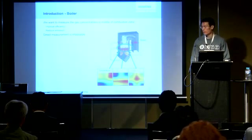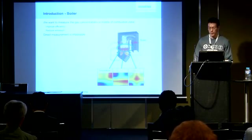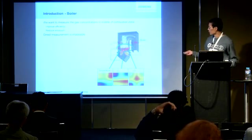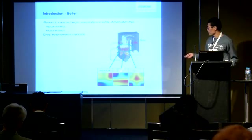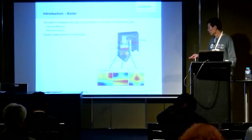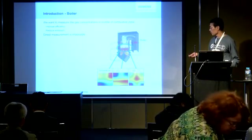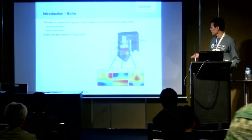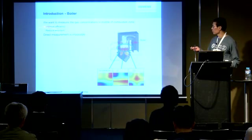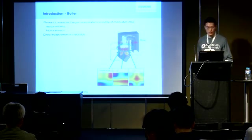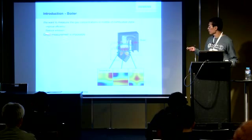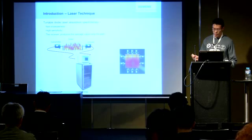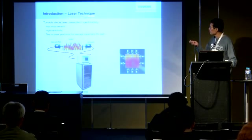To operate the boiler efficiently, you really want to know what's going on inside the combustion zone. For example, we want to know the gas concentration of oxygen and also carbon monoxide. After we know these quantities, we can help improve efficiency and reduce emissions. However, direct measurement inside this high-temperature zone is not possible, so that's why people invented a laser technique.